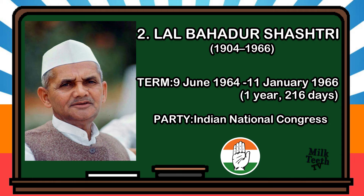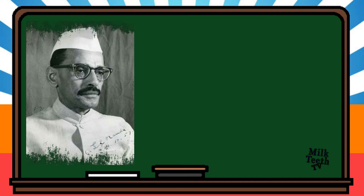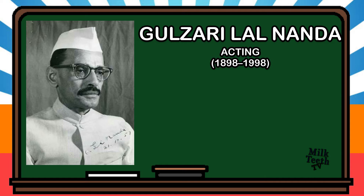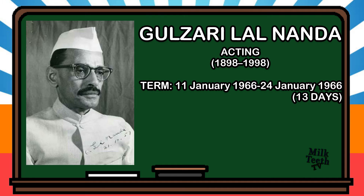Following the death of Lal Bahadur Shastri, Gulzari Lal Nanda was again appointed as acting Prime Minister of India for a period of 13 days. His term lasted from 11th January 1966 to 24th January 1966. Party: Indian National Congress.